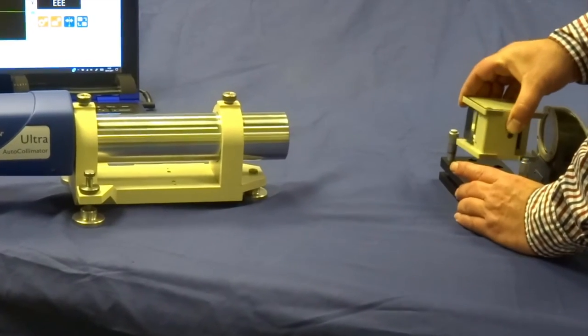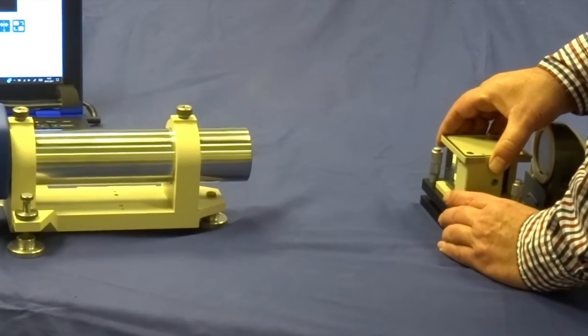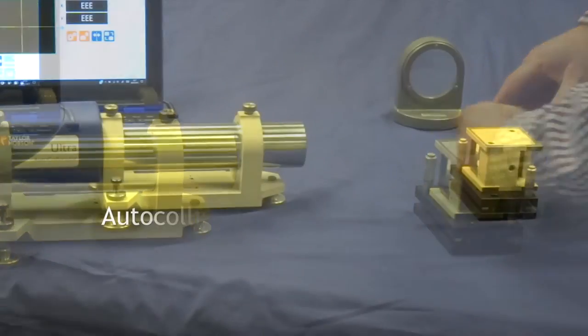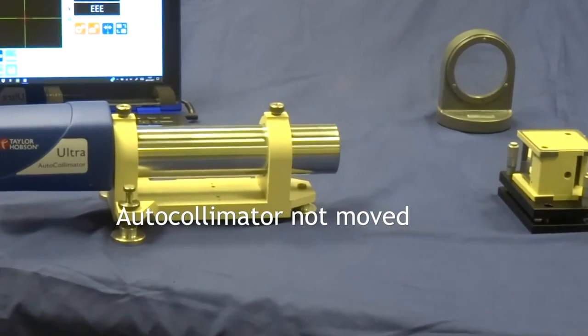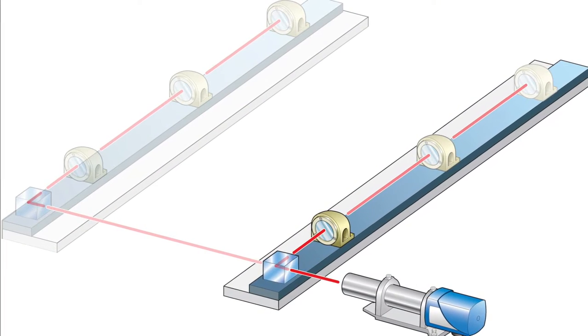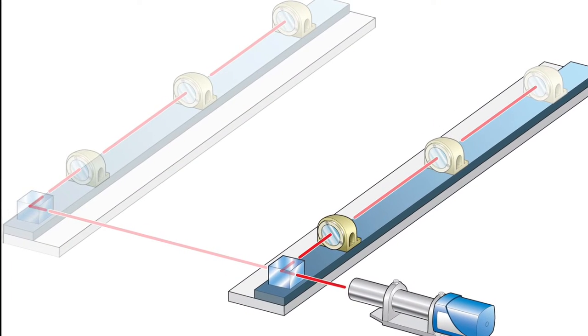Now we must insert the optical square and bend the light through 90 degrees. It is hugely important that the autocollimator is not moved when we measure the second slideway, as this must act as a datum.